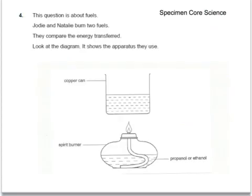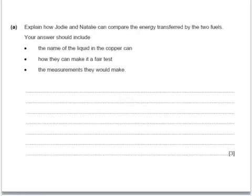This is a past paper question. It says that this question is about fuels. Jody and Natalie burn two fuels and compare the energy transferred. Look at the diagram, it shows the apparatus they use. There's the copper can or calorimeter, the spirit burner and the two fuels propanol and ethanol, both of which are alcohols. Part A says explain how Jody and Natalie can compare the energy transferred by the two fuels. Your answer should include the name of the liquid in the copper can, how they could make it a fair test, and the measurements they would use.